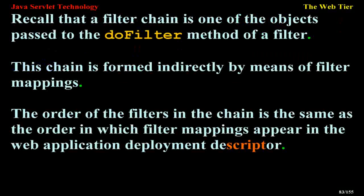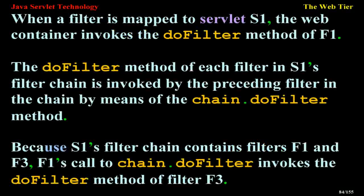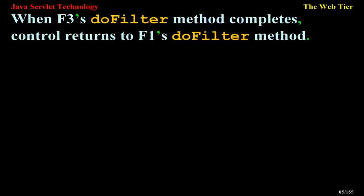A filter chain is one of the objects passed to the doFilter method of a filter. This chain is formed indirectly by means of filter mappings. The order of the filters in the chain is the same as the order in which filter mappings appear in the web application deployment descriptor. When a filter is mapped to servlet S1, the web container invokes the doFilter method of F1. The doFilter method of each filter in S1's filter chain is invoked by the preceding filter in the chain by means of the chain.doFilter method. Because S1's filter chain contains filters F1 and F3, F1's call to chain.doFilter invokes the doFilter method of filter F3. When F3's doFilter method completes, control returns to F1's doFilter method.